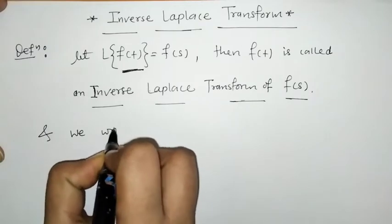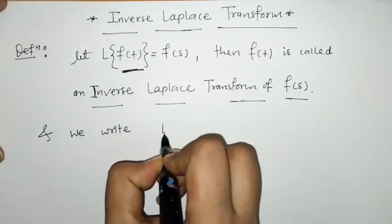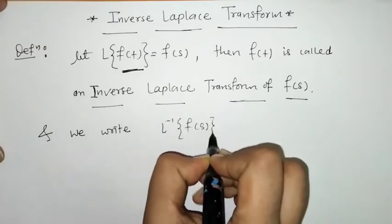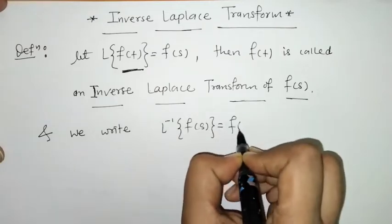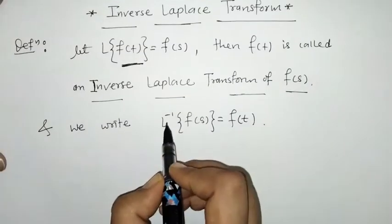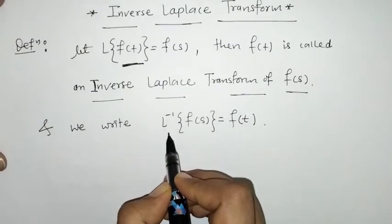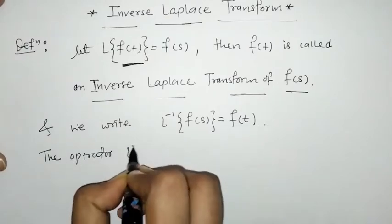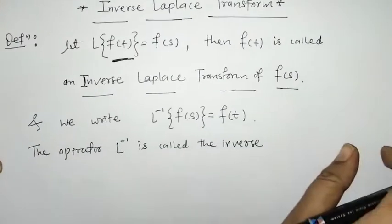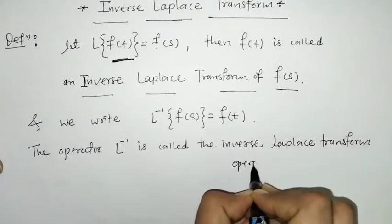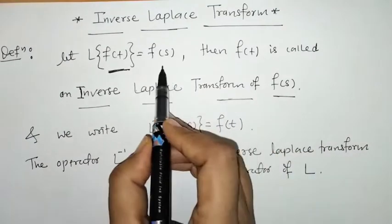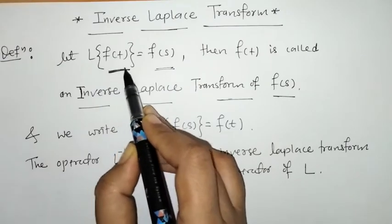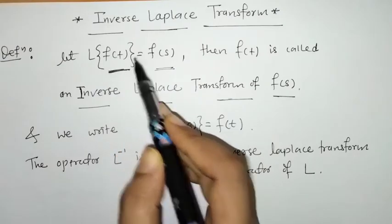We can write this as: L⁻¹{F(s)} = f(t). This operator L⁻¹ is called the inverse Laplace transform operator. So F(s) is the Laplace transform and f(t) is the inverse Laplace transform.